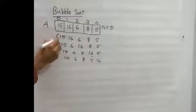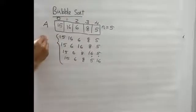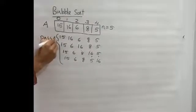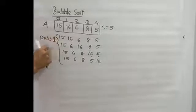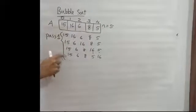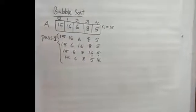After pass one, the largest element is placed at the last position. However, the array is not yet fully arranged, so we move to pass two.